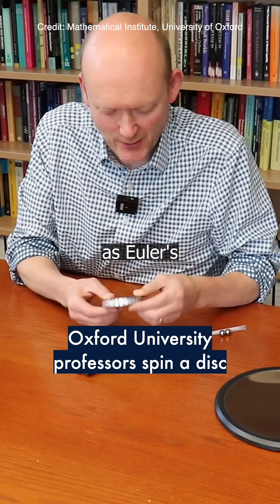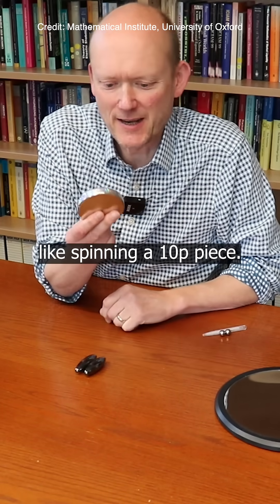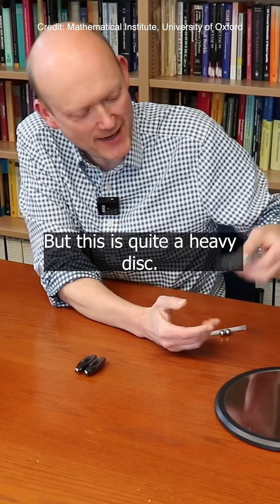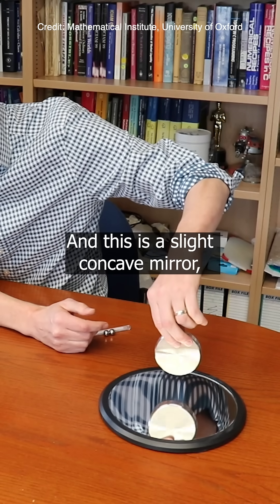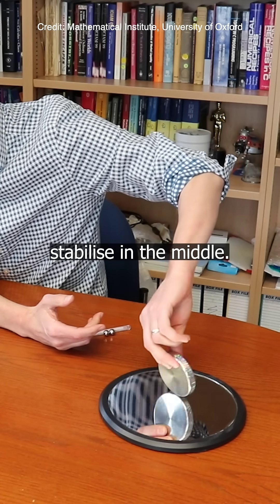So this is a little toy known as Euler's disc. It's essentially like spinning a 10p piece, but this is quite a heavy disc and this is a slightly concave mirror which just helps it stabilize in the middle.